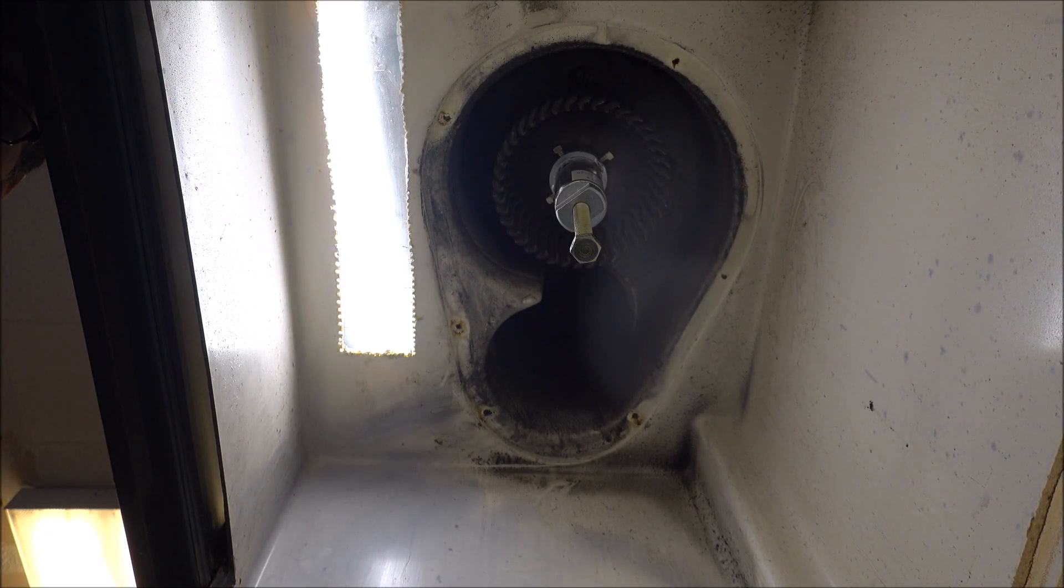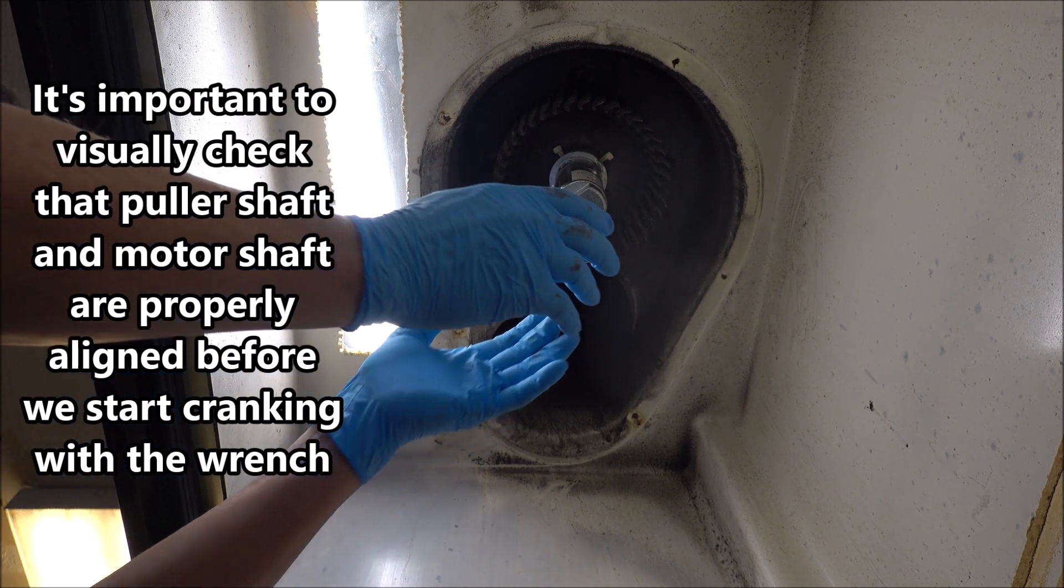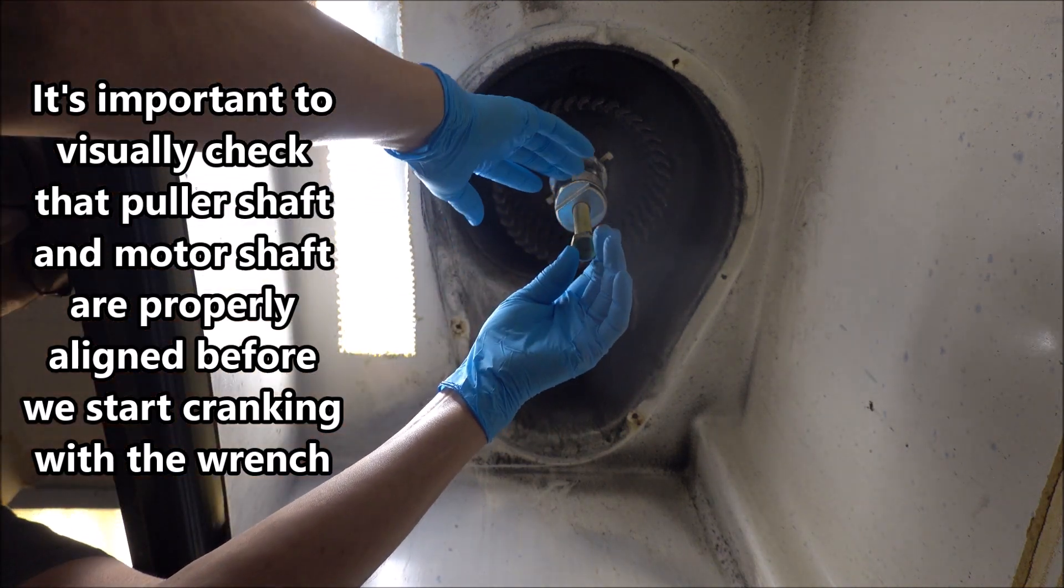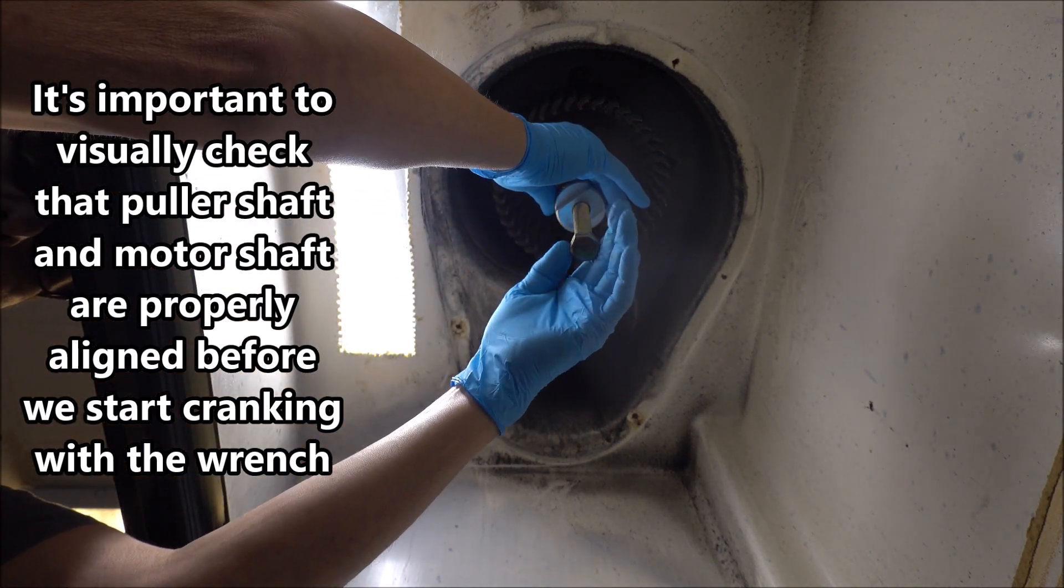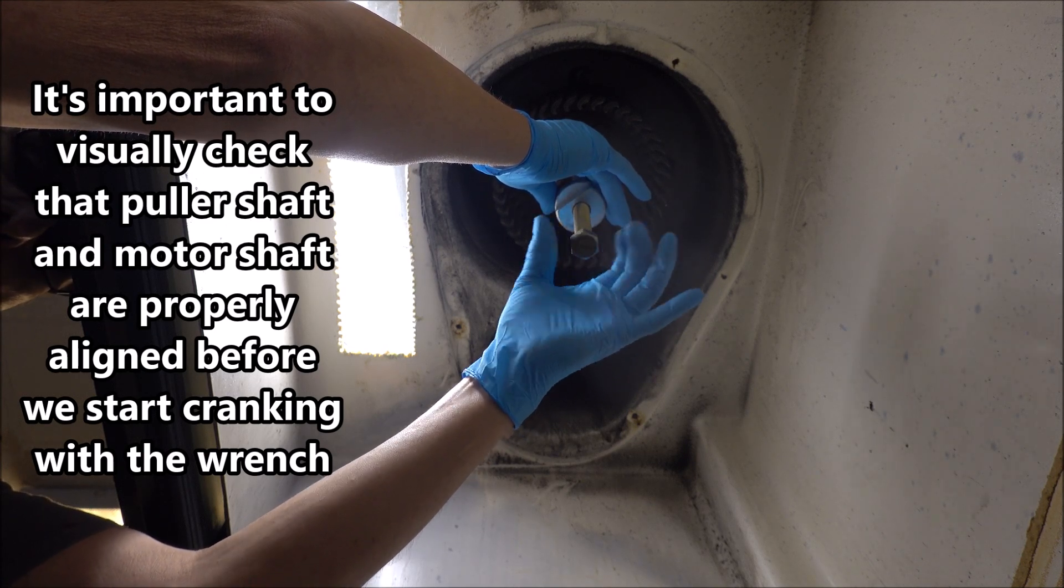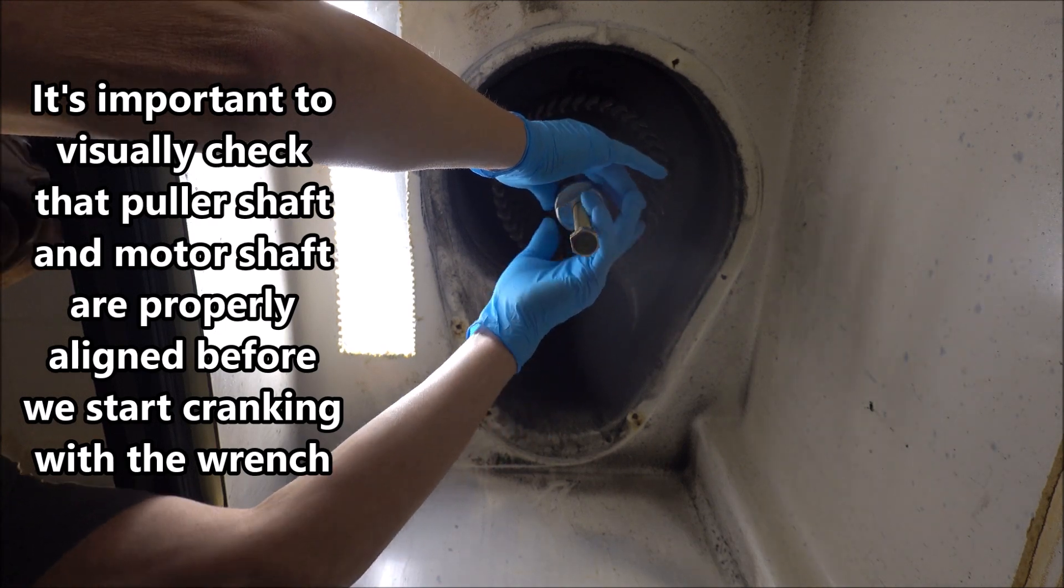I've got the puller firmly attached to the hub of the wheel and now what we're going to do is slowly screw this center screw up here until it contacts the shaft of the motor and then, hopefully, it'll pull that squirrel cage right off for us.